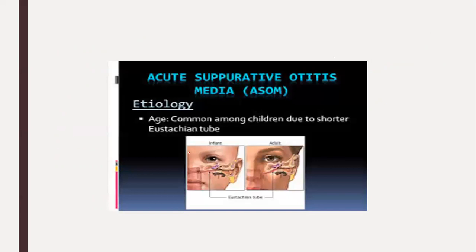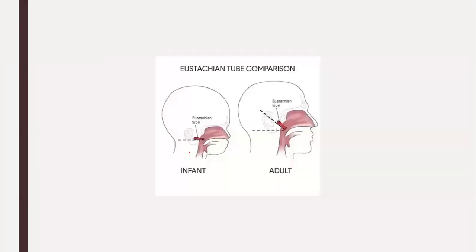This is a picture of a Eustachian tube comparison. This is the infant's Eustachian tube and this is the adult's. The size can be different — the infant's is very small. When comparing with that of an infant, the adult Eustachian tube is larger in size, so the infection rate will be less in the case of adults compared with infants.